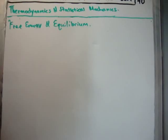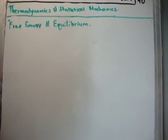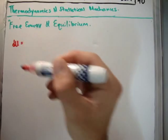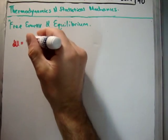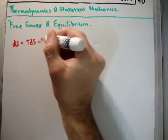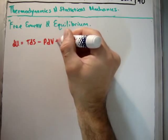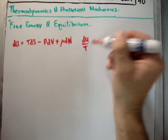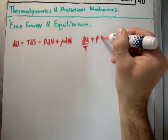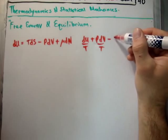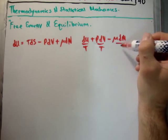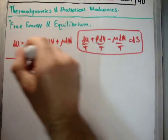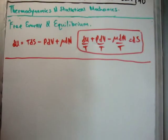We saw this in video number 39. So we have that du, the infinitesimal change in anything's internal energy, is T ds minus p dv plus mu dn. We can rearrange this as du over T plus p dv over T minus mu dn over T equals ds. This is the formula for an infinitesimal change in the entropy of anything.